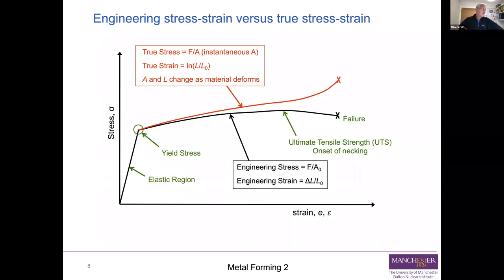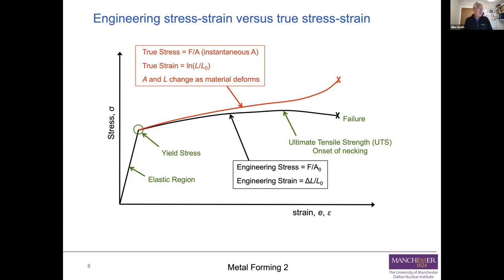Once the neck starts to form, the true stress-true strain curve goes up quite sharply, because in the neck the cross-section is falling rapidly, so the true stress is going up and strain is localising.